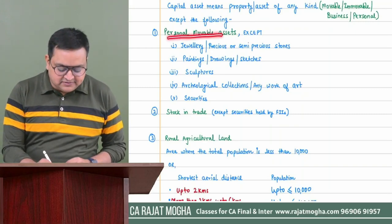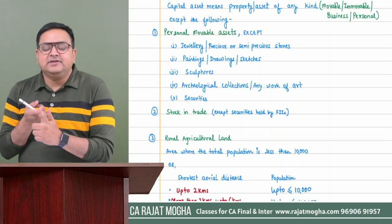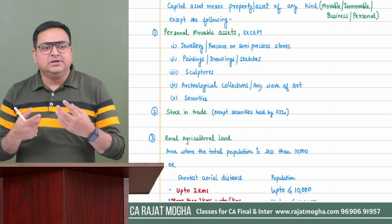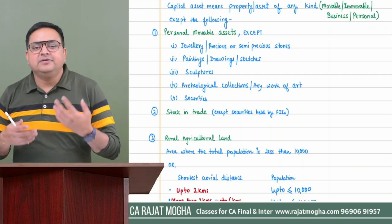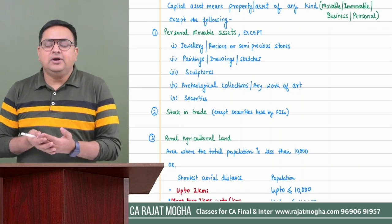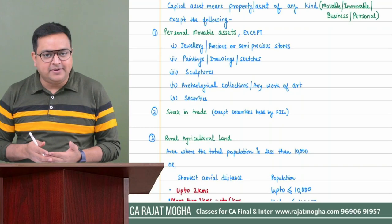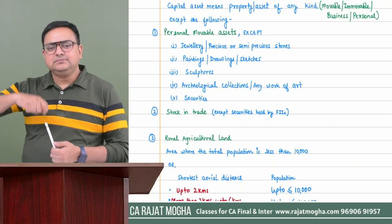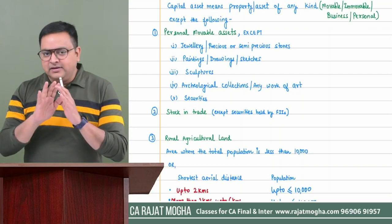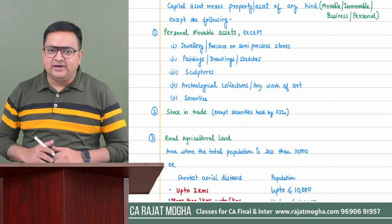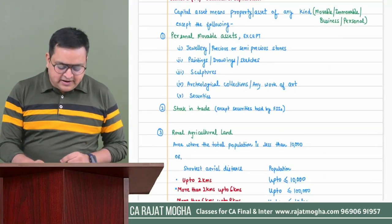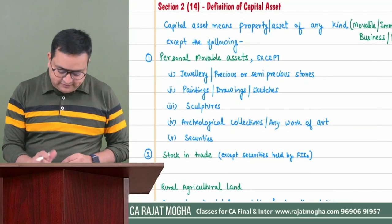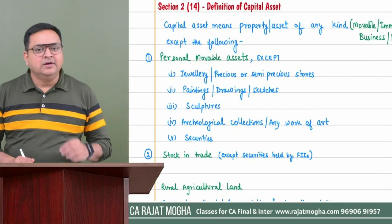The first exception is personal movable assets — these are not capital assets. Examples include a personal car, personal furniture, personal computer, personal laptop, personal watch, etc. If an assessee has sold their personal car or personal furniture, capital gain will not arise because it is not a capital asset. Other exceptions include stock in trade, rural agriculture land, gold deposit bonds, and special bearer bonds.